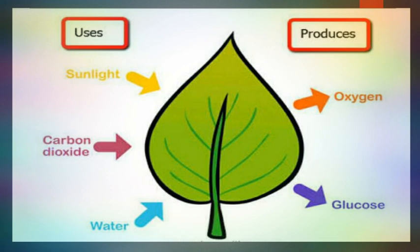Plants have chlorophyll in chloroplasts. Chlorophyll is a green pigment present in chloroplasts. With the help of these organelles, plants absorb sunlight, carbon dioxide, and water, which together form glucose during photosynthesis.